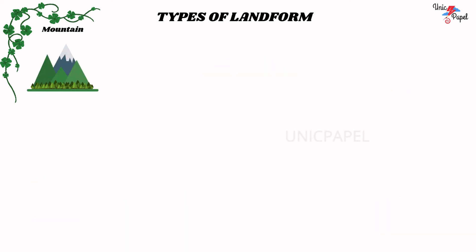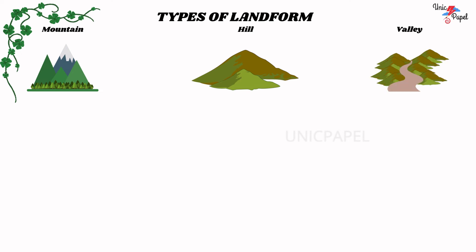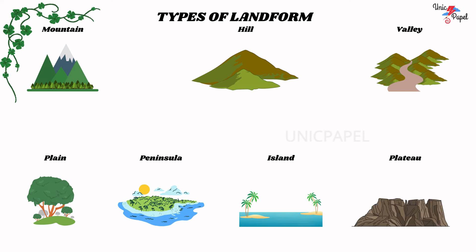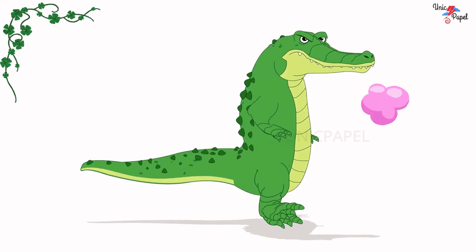The types of landforms are: Mountain, Hill, Valley, Plain, Peninsula, Island, Plateau. Good job!